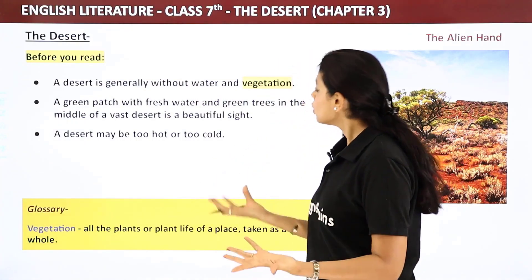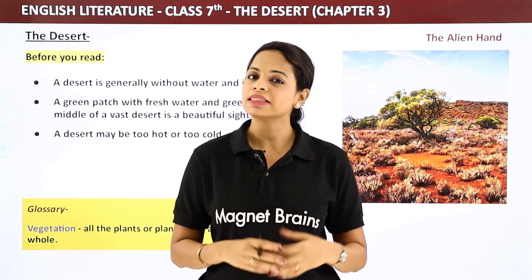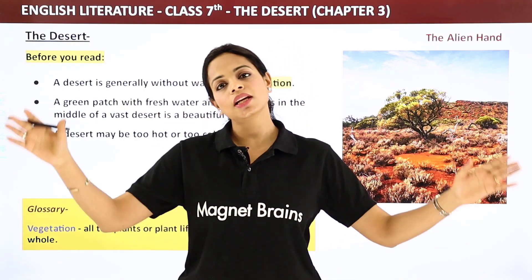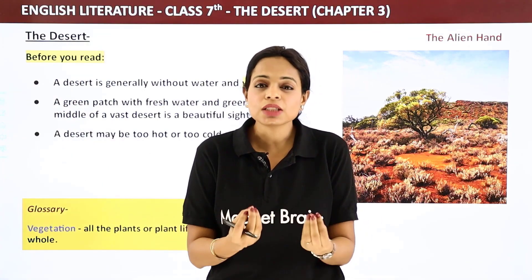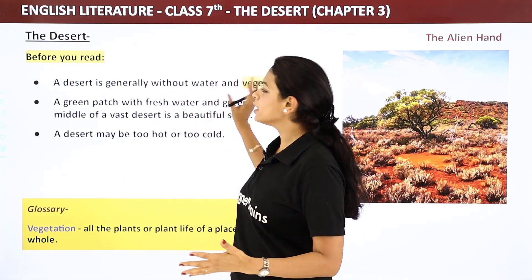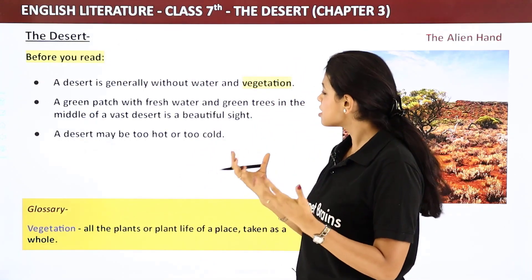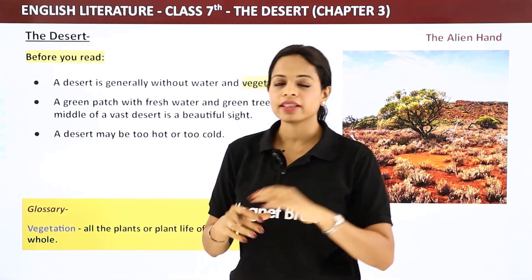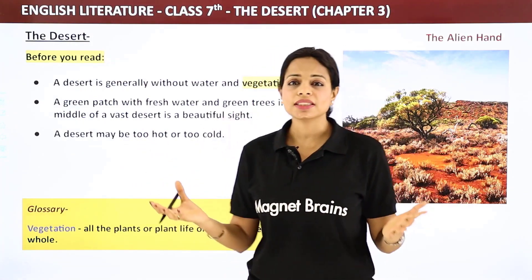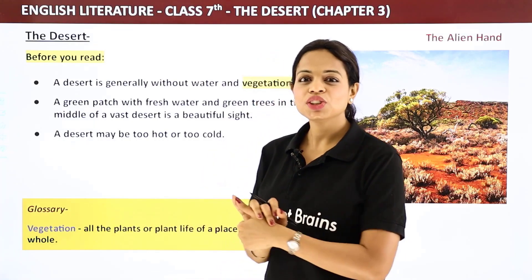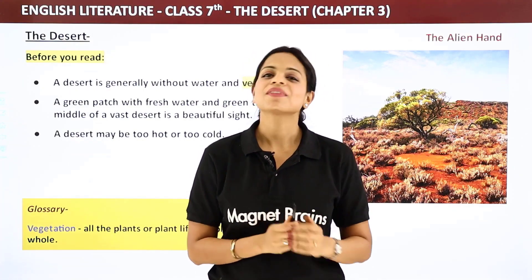A desert is generally without water and vegetation. Vegetation means the growth of plants — jo chhote chhote plants ugte hain. In desert mein we usually imagine it's like plain, reti reti, sandy — kuch hota nahi wahan pe. A green patch with fresh water and green trees in the middle of a vast desert is a beautiful sight — hota hai kya aisa? A desert may be too hot or too cold. Kaunsa desert hota hai jo bahut cold hota hai? We'll see that.